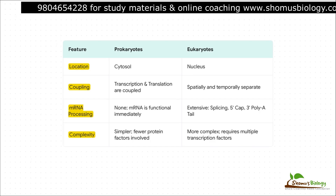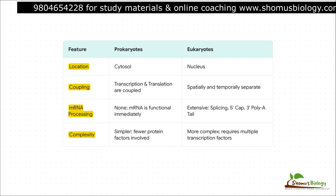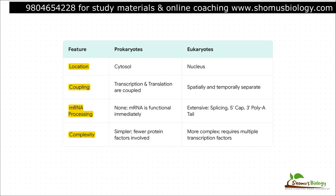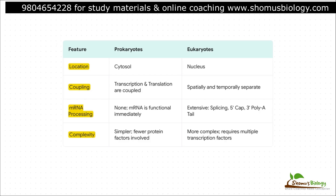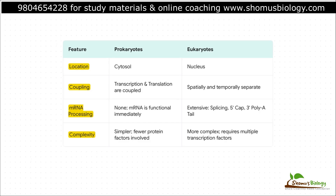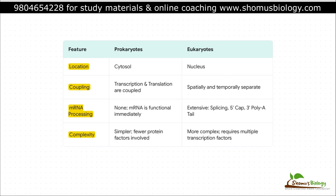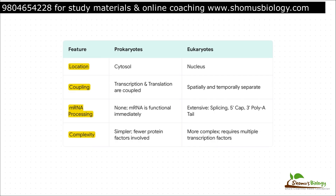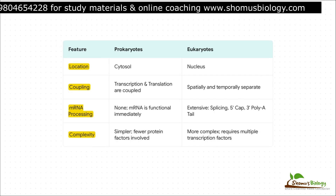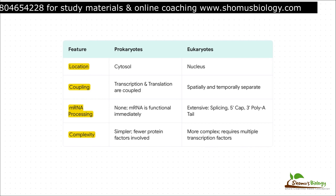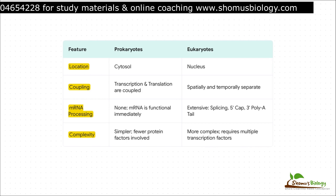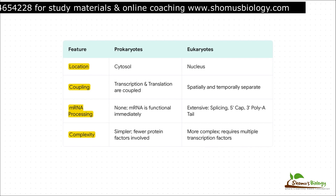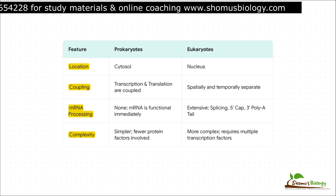In eukaryotes, it's a completely different story. It's a long, drawn-out process. First, you transcribe in the nucleus, then you do all this fancy mRNA processing — splicing, adding a cap, a tail — and only then do you ship it out to be translated. It's way more complex.